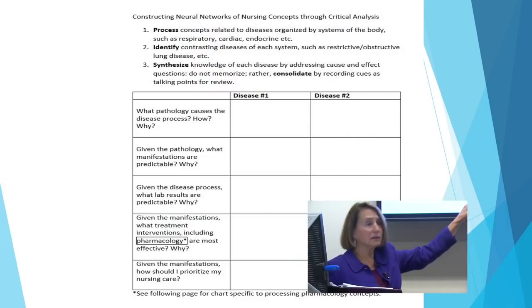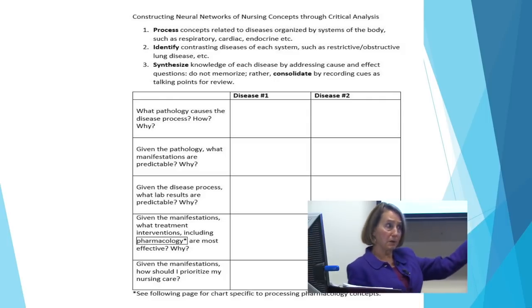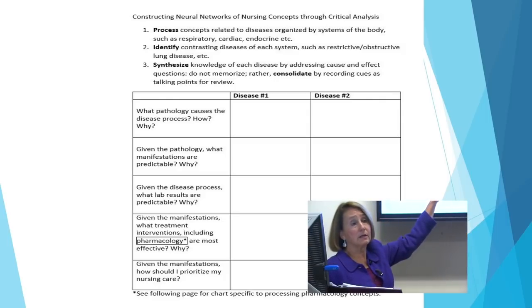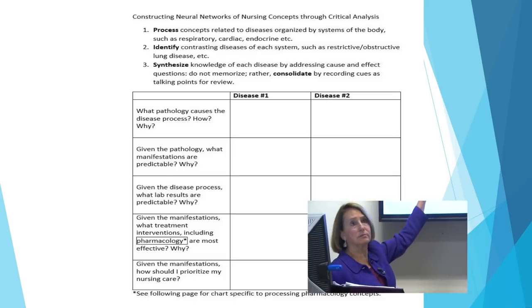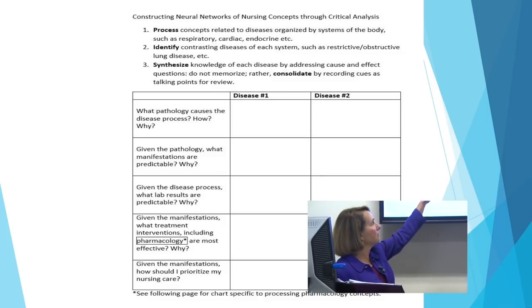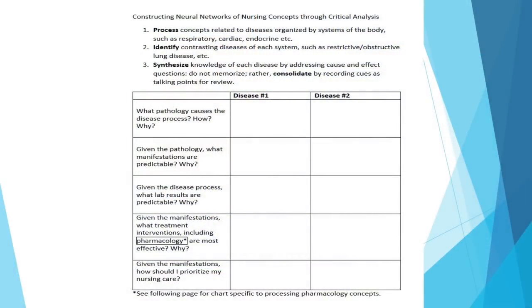For example, with cardiac — let's say you have failure on the right side and failure on the left side, opposing pathophysiologies. To deeply understand and critically analyze them, it begins with the question: what pathophysiology causes the disease to begin — the etiology — and how does it progress step-by-step through the cells and systems? Of course you need normal anatomy and physiology to know what went wrong. Then, cause and effect — given the pathophysiology, what manifestations would I predict? Not memorize, but predict. The brain says, yes, that's logical, I can store that, I can use that. You're predicting what the patient would present based on what you know.